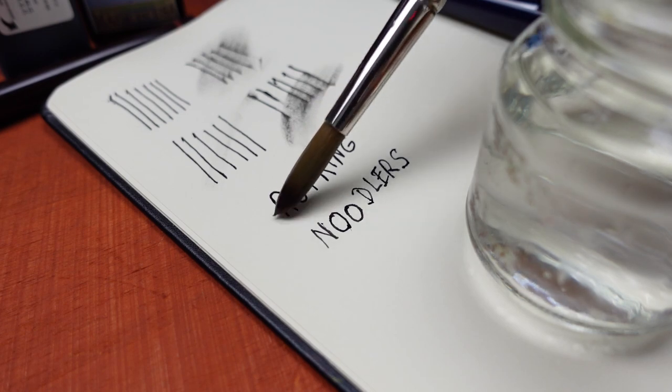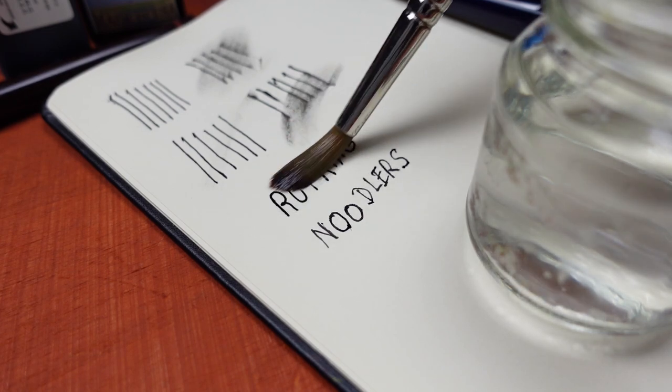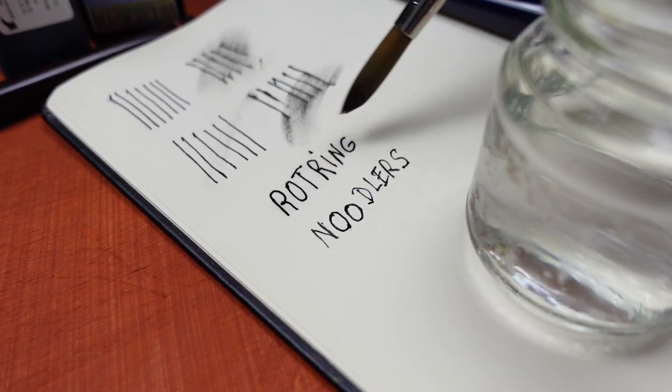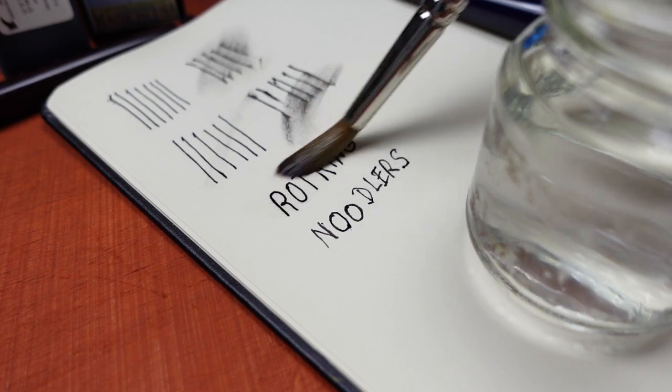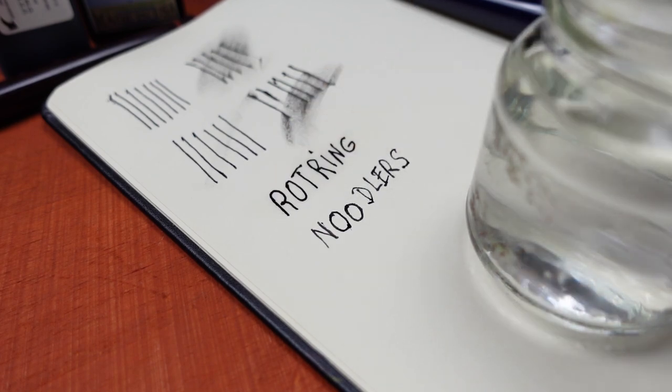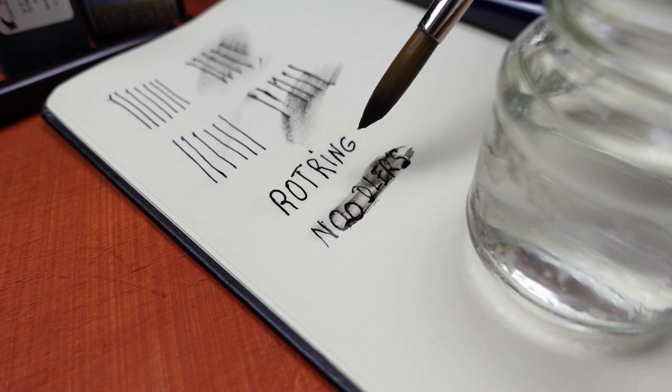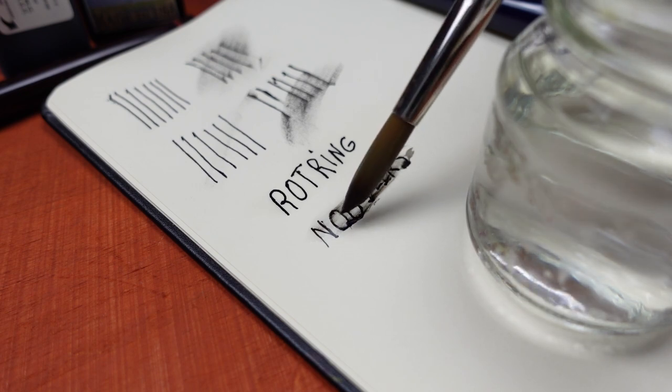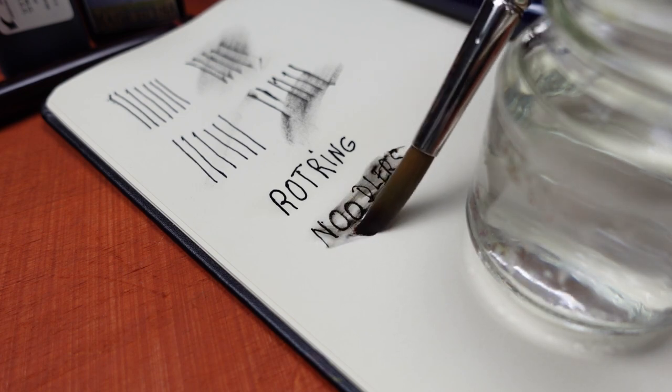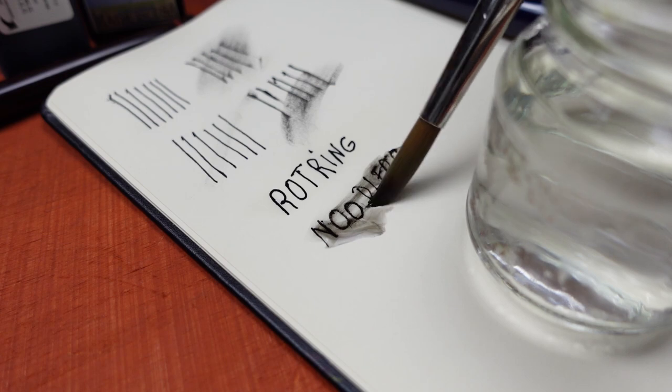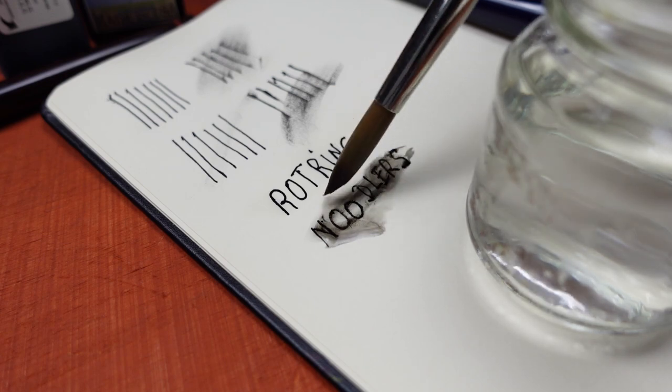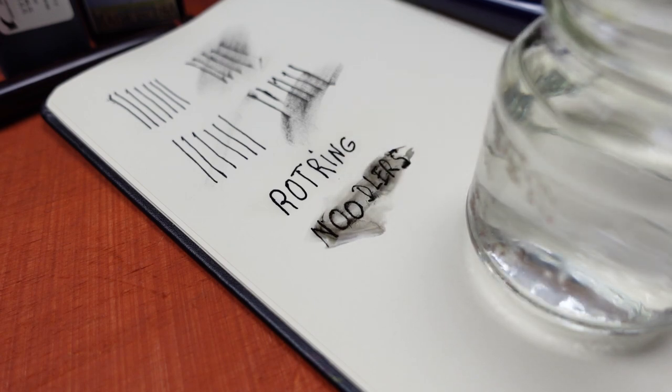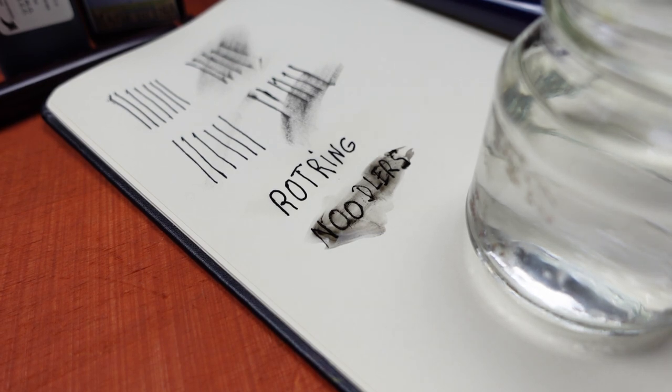Applying water on Rotring ink. Then applying on Noodler's ink. It seems that Noodler's ink hasn't dried yet completely. I think it needs to dry much more time than 5 minutes.